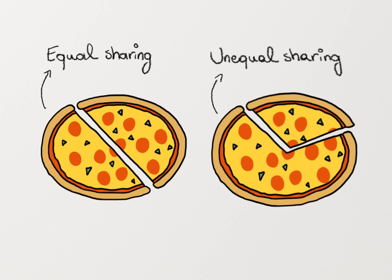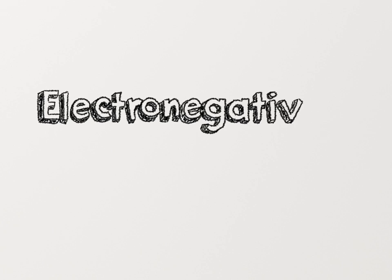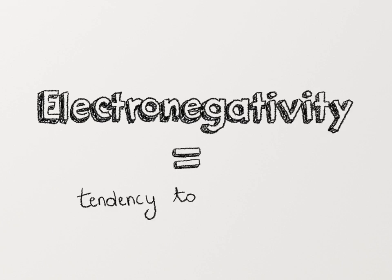How would I know if atoms share equally or not? That's a good question. The key is to look at the electronegativity of each atom that's involved in the covalent bond. More specifically, what we do is we look at the difference in electronegativity between the atoms. Remember, electronegativity is just the tendency of an atom to want the electrons to be close to its nuclei.